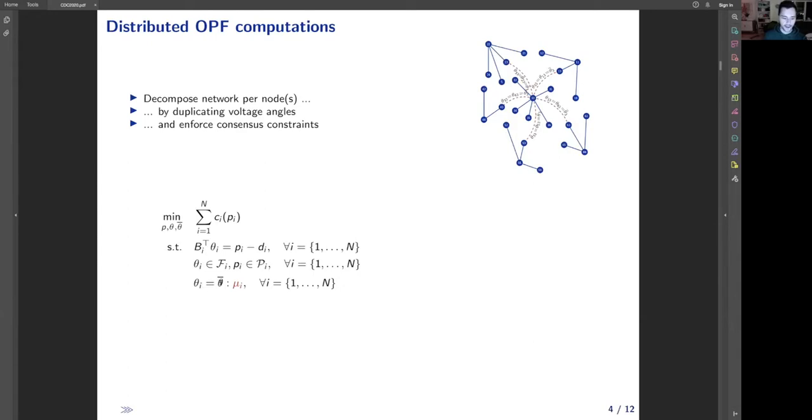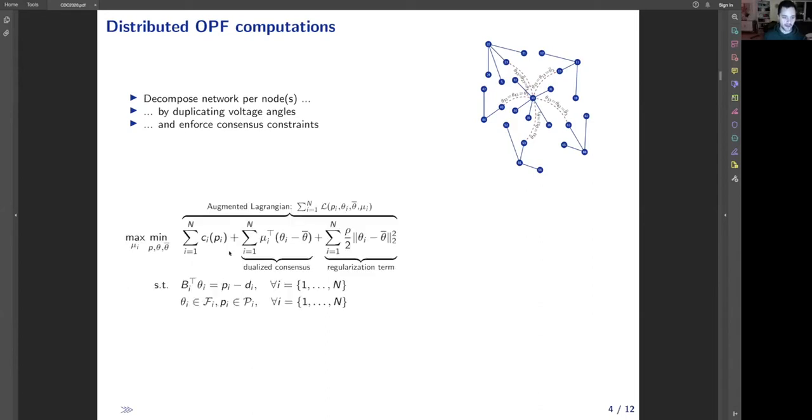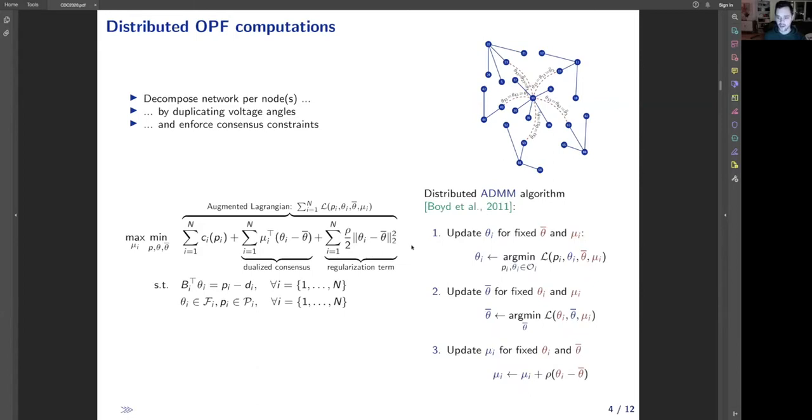This problem can be solved in a distributed way by dualizing this consensus constraint. It includes optimization of the following augmented Lagrangian function that minimizes overall cost, the dualized consensus variable, and proximal term that makes the problem strictly monotone subject to node-specific constraints. We can use augmented alternating direction method of multipliers to solve this problem in a distributed way. First, local updates are updated by every subgraph, then the consensus variable is updated respecting the local updates, and then the dual variable of consensus constraint is updated using local updates and a consensus value.